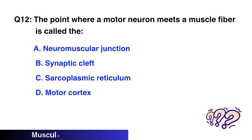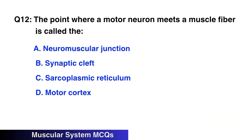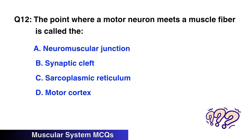Question No. 12: The point where a motor neuron meets a muscle fiber is called — the right option is C: Neuromuscular junction.